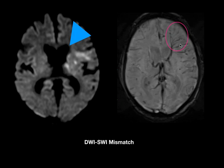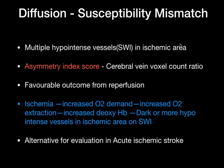So what is this entity and what are its advantages? Diffusion susceptibility mismatch is multiple hypointense vessels in the ischemic area, where the region should not show any restriction. We use an important score called the asymmetry index score, where we count cerebral veins in a single voxel in the ischemic area divided by cerebral veins in the normal brain parenchyma. This score helps in assessing reperfusion benefit and indicates a favorable outcome from reperfusion.